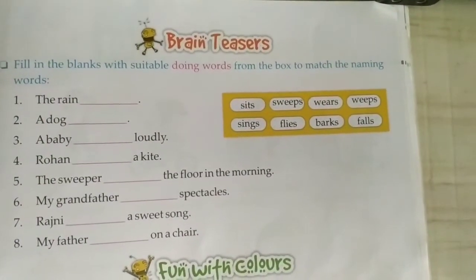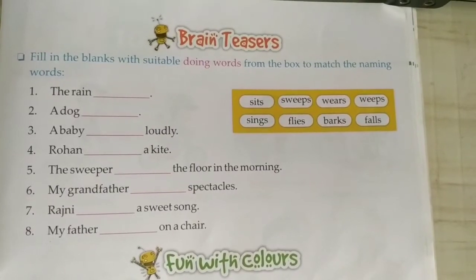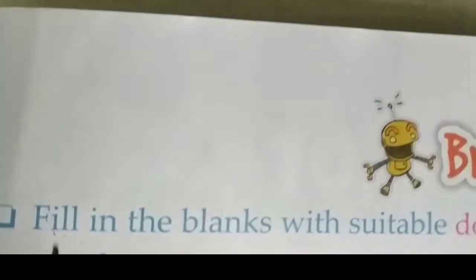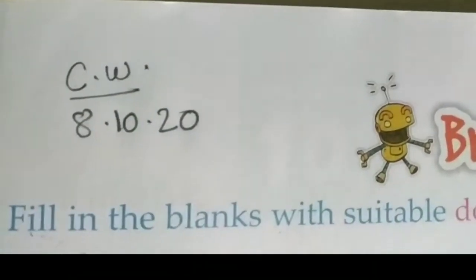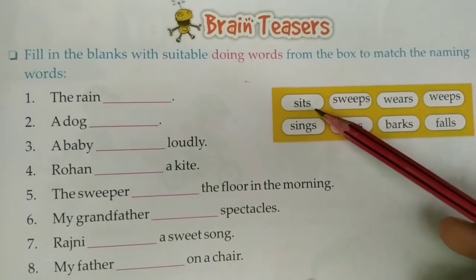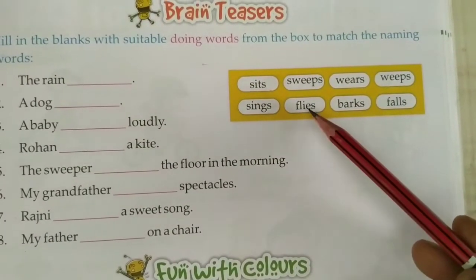Today we will do from your English grammar book page 51. Now we know what doing words are — that is, action words. So fill in the blanks with suitable doing words from the box to match the naming words. First, write CW and today's date. The helping words given are: sits, sweeps, wears, weeps — weeps means to cry — sings, flies, barks, falls. These are all action words, doing words.